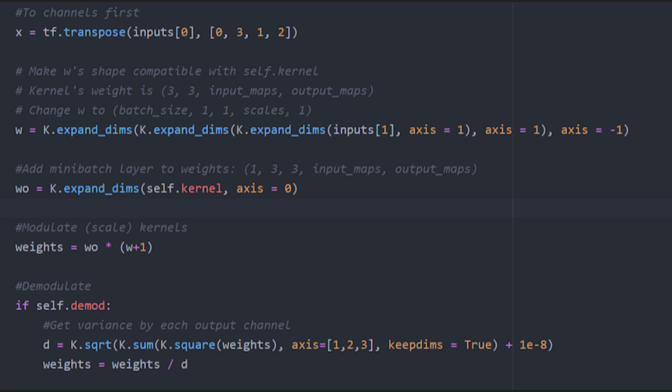Now we move on to modulating and demodulating just like what we looked at. We multiply the kernel with the input weights. Then we get the L2 norm of the weights based on their output weights and divide by that value.